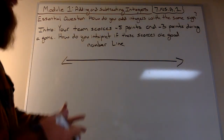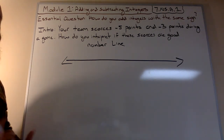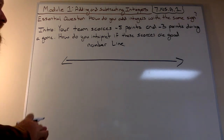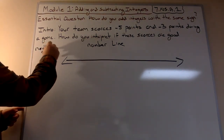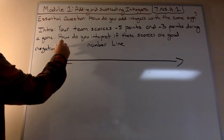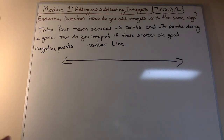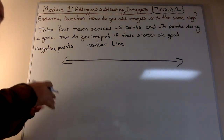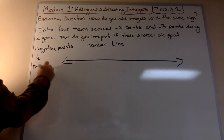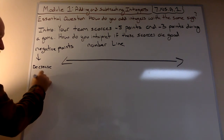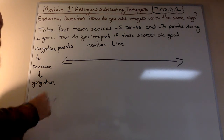Your team scores negative five points and negative three points during the game — how do you interpret if these scores are good? You should be focusing on the key word: negative. So if you have negative points, you've got to think which way is this going — is negative going up or down? In this case, we know that negative is decreasing, it's going down.